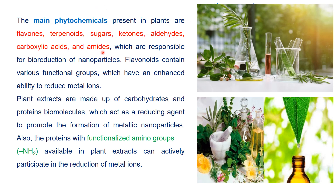Flavonoids contain various functional groups that have an enhanced ability to reduce metal ions. Plant extracts made up of carbohydrates and protein biomolecules act as reducing agents and promote the formation of metallic nanoparticles. Proteins have functionalized amino groups available in plant extract that can actively participate in the bioreduction of metal ions into corresponding nanoparticles.